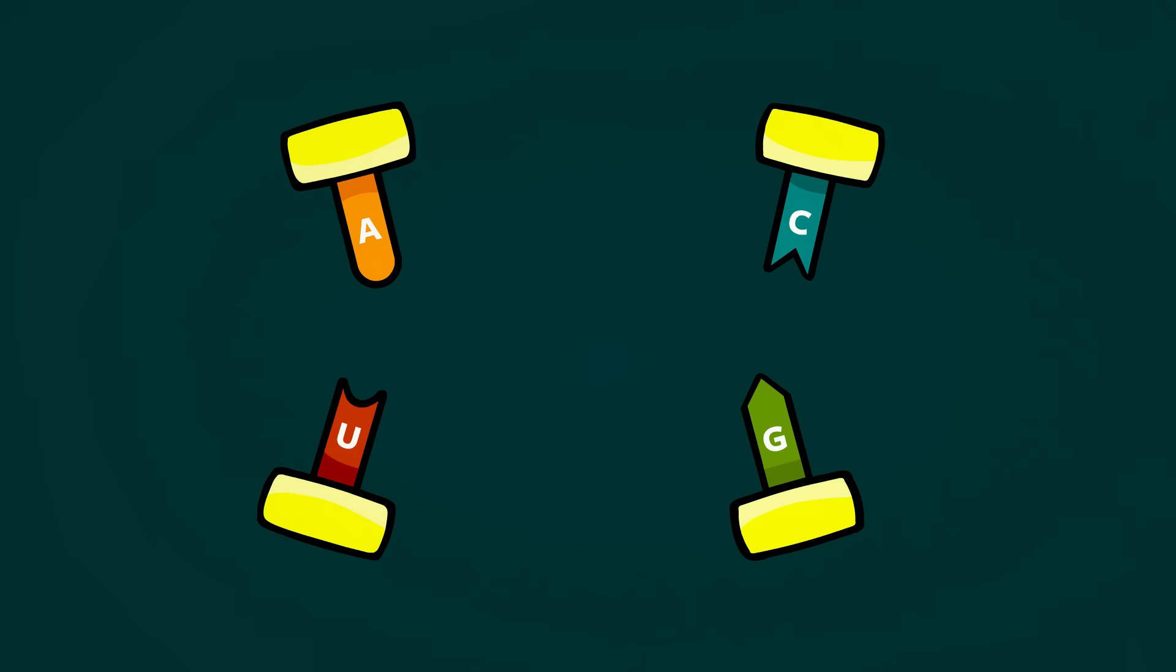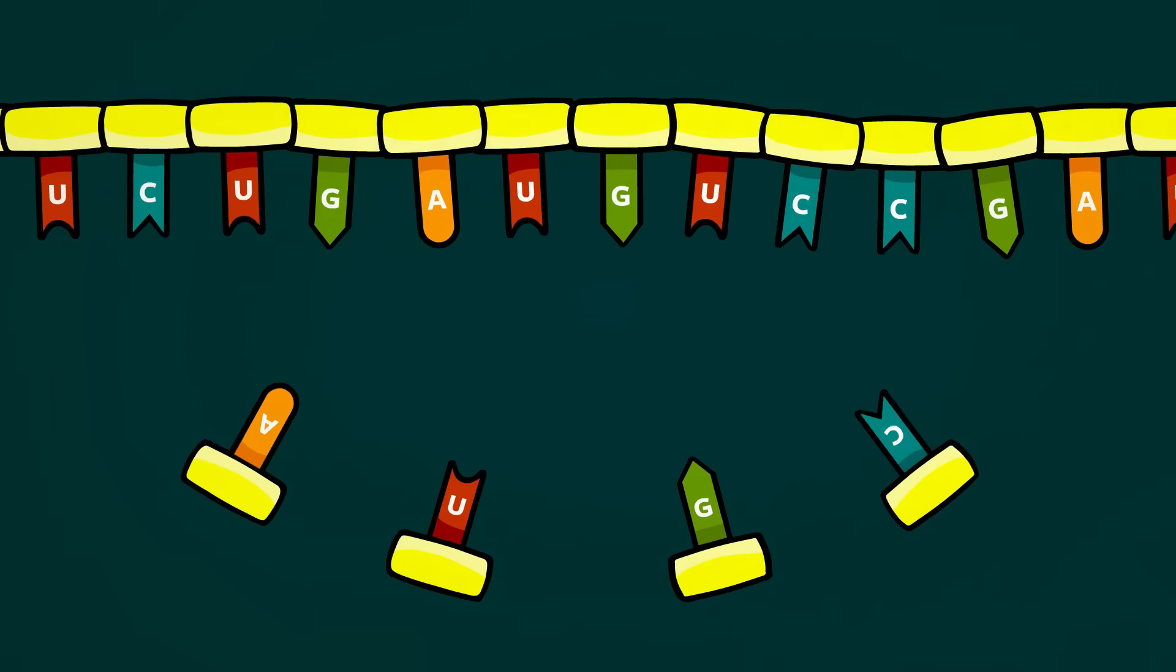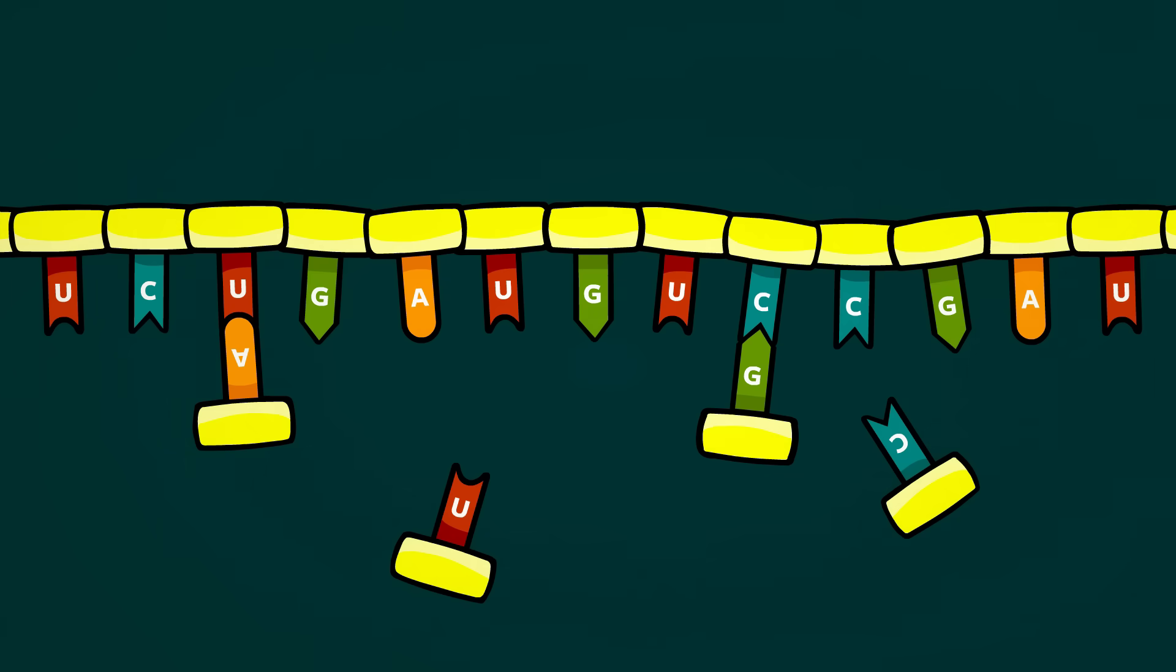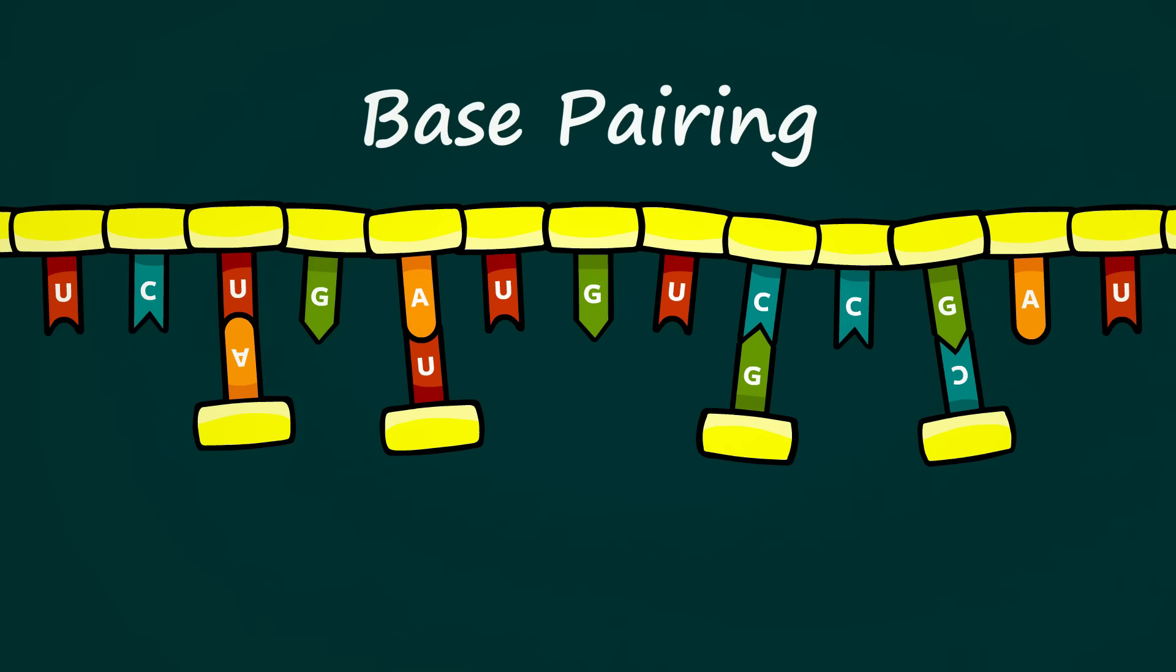The parts we call the bases of nucleotides, the colored sections labeled A, C, U, or G, are attracted to other bases sort of like a magnet, but they're selective about who they will stick to. G selectively pairs with C. A selectively pairs with U. When bases find their matches and stick together, we call it base pairing.